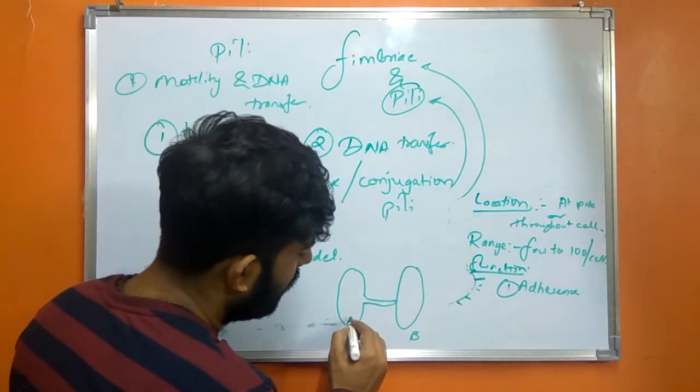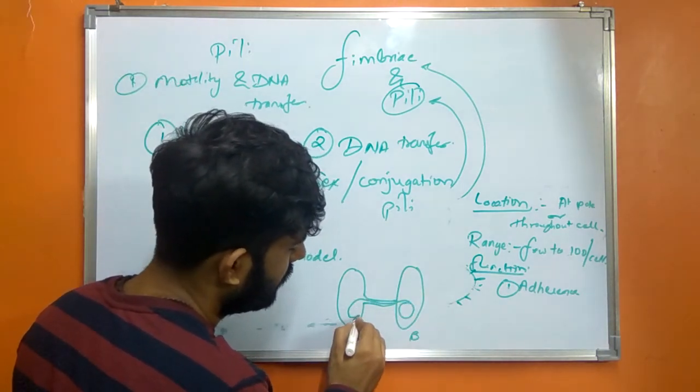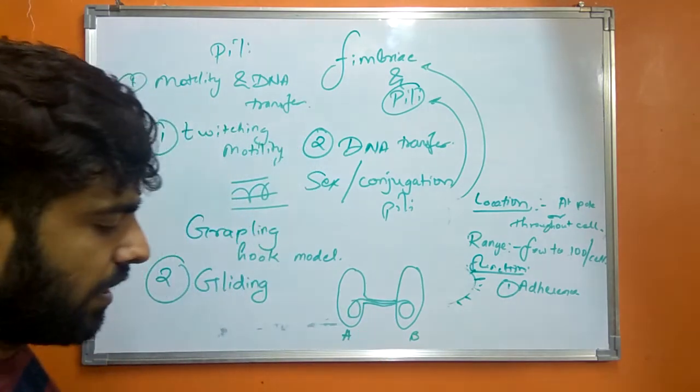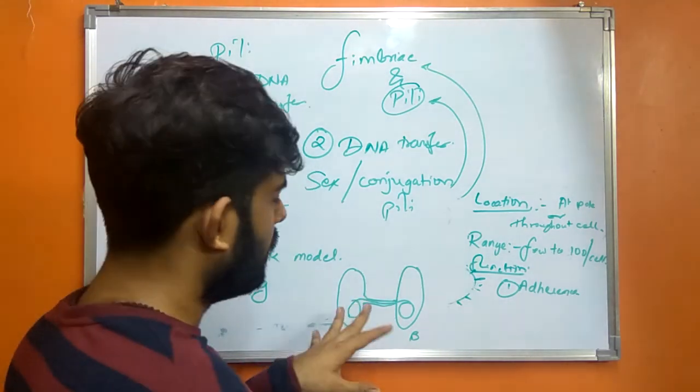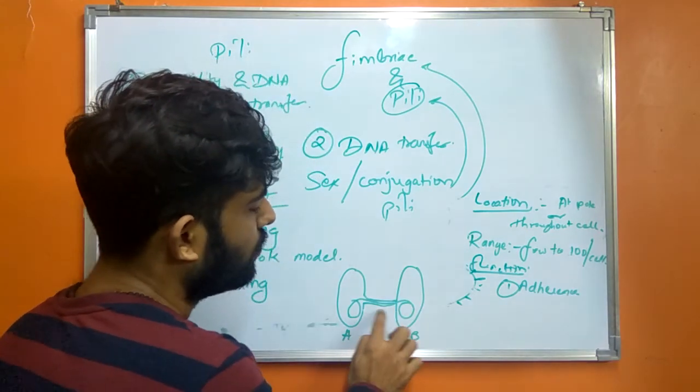Thereby transfer of genetic material, that is the DNA, takes place. So this transfer from one bacterium to another bacterium takes place due to conjugation Pilli. Another bacterium may be from the same species or from different species.